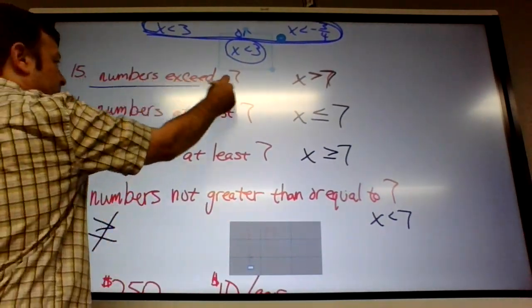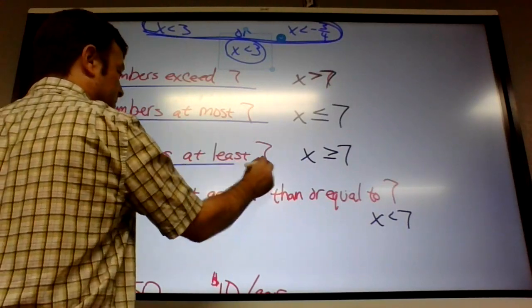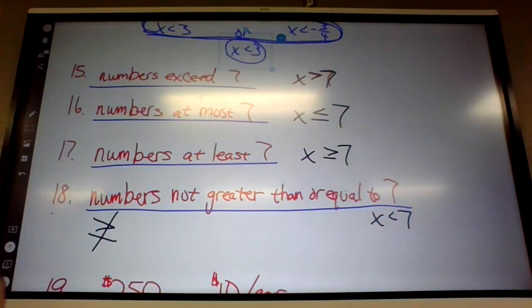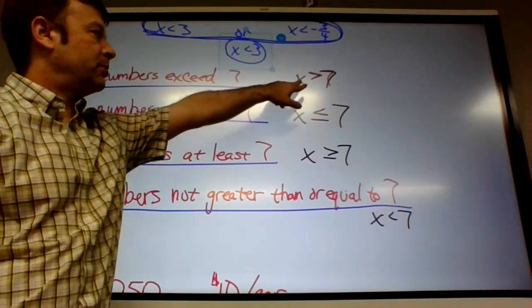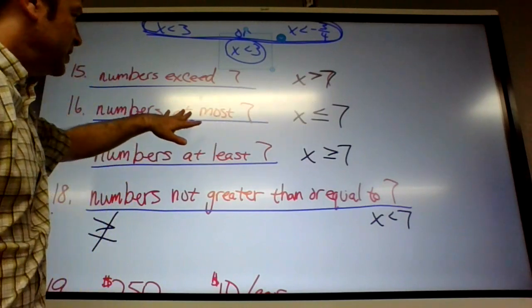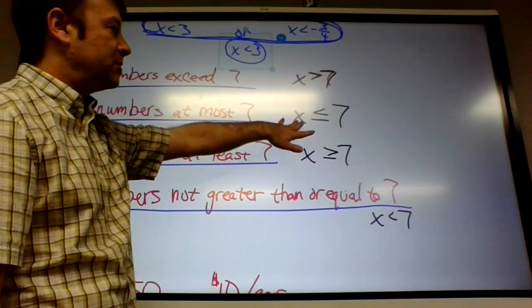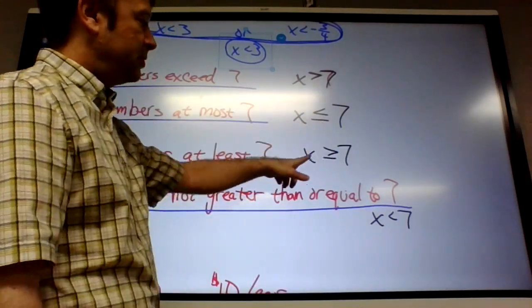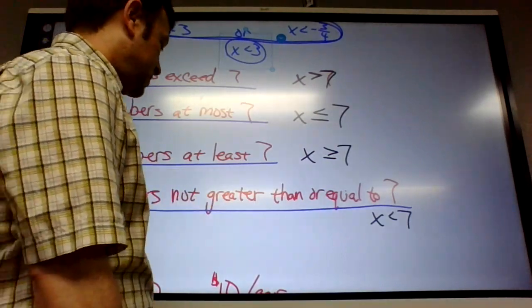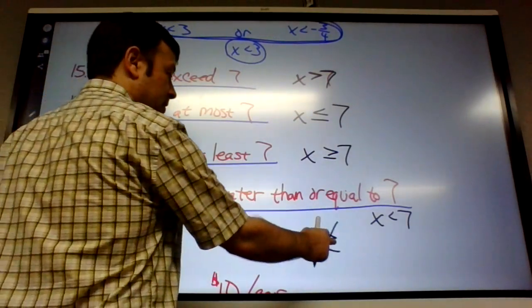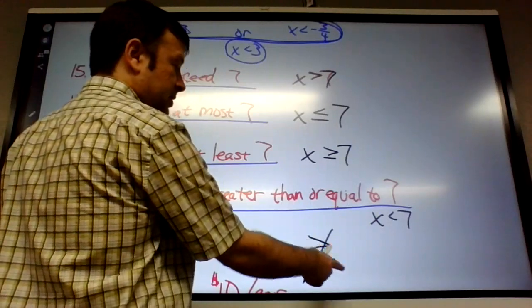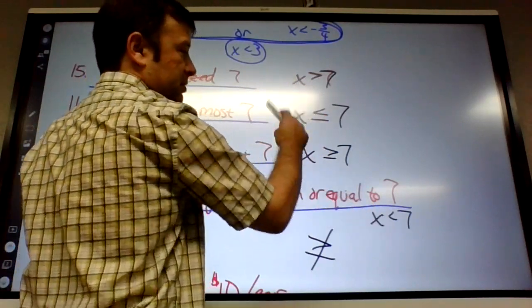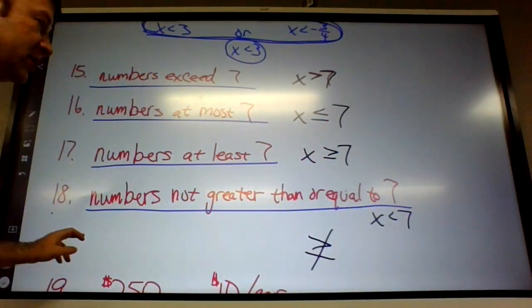So, these are basically matching questions. These four go together. And the black are the answers. So, if your age exceeds 7, that means you're older than 7 or greater than 7. If your age is at most 7, you're 7 or younger, so X is less than or equal to 7. If you're at least 7, that means you're 7 or older, greater than or equal to. If you're not greater than or equal to, the opposite of greater than or equal to, then you're less than. So, notice there's one of each. Kind of figured out by process of elimination.